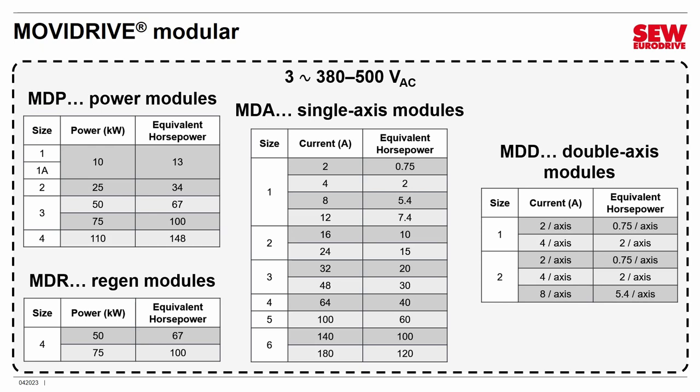Double-axis modules are a little more limited, but remember they handle two motors each — they handle between 2 and 8 amperes, about three-quarters of a horsepower up to 5.4. There's some overlap in size 1 and size 2: size 1 modules are smaller and meant for applications where space is at a premium, but they don't have expansion slots, so you can't add expansion cards. If you need those slots and don't care about space, size 2 is the choice. All these numbers are based on 4 kilohertz pulse width modulation.